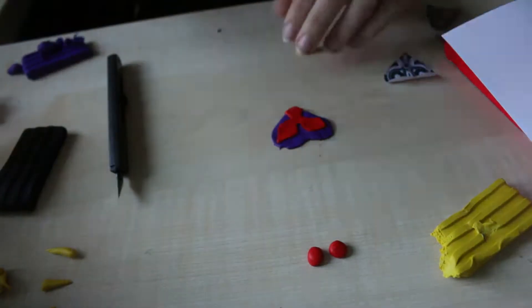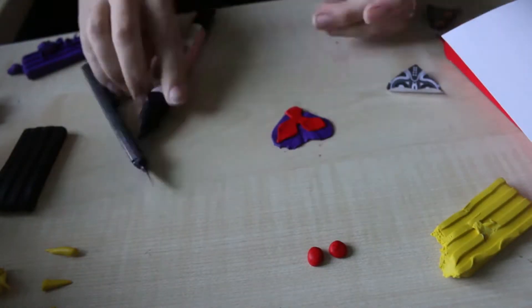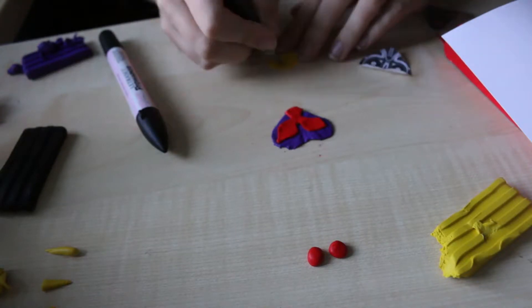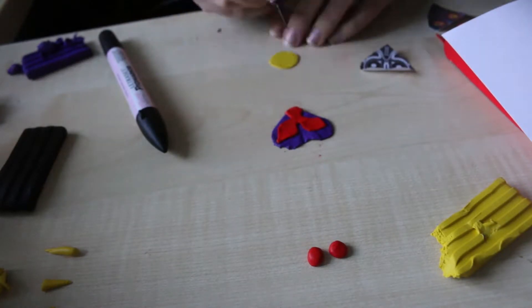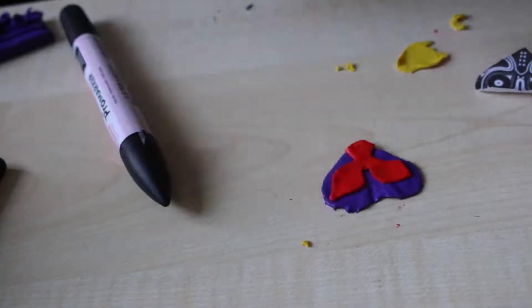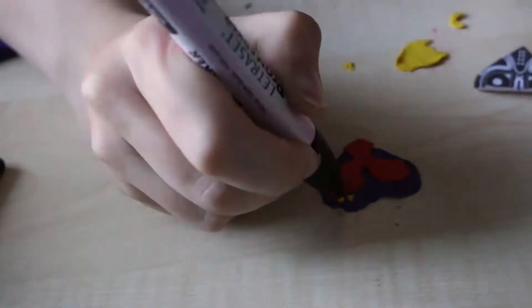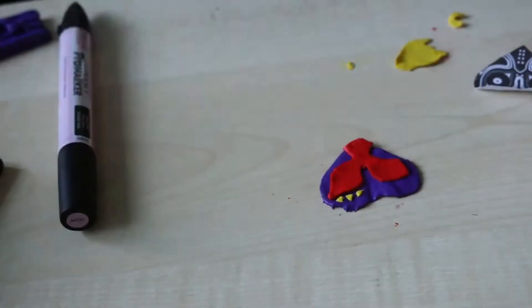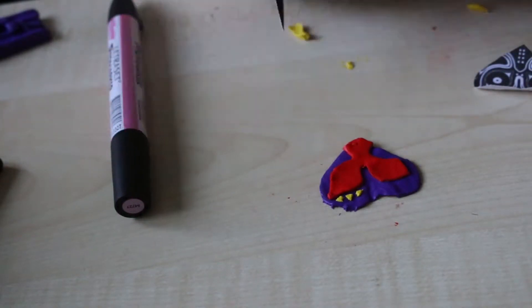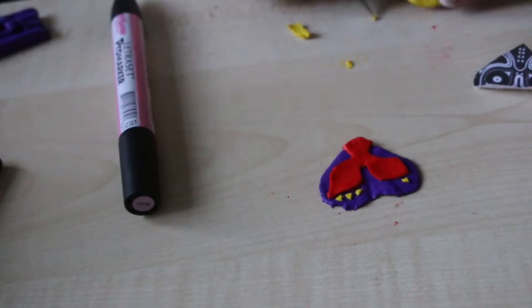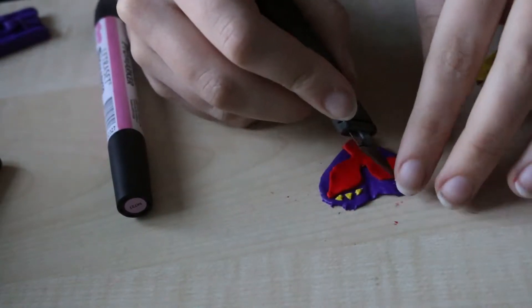If I was going to do it again, I'd do it way bigger. I did it tiny for some stupid reason, but it just added to the challenge, let's be honest. Next thing I did was the little triangles. They were tiny, about the size of a pinhead, and I had to pick them up with the tip of the exacto knife because they were so small.